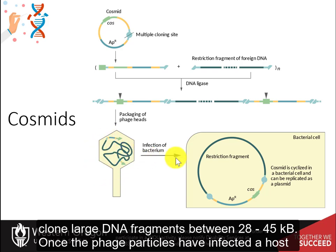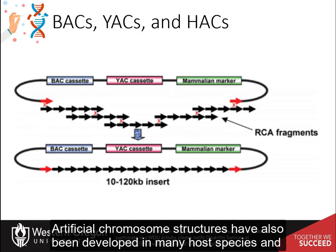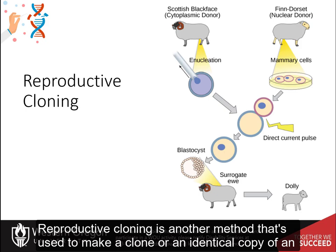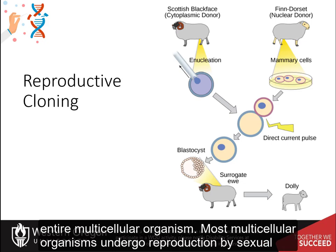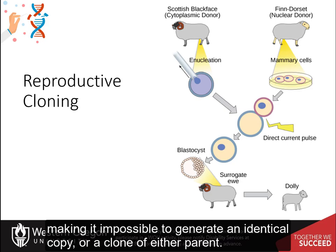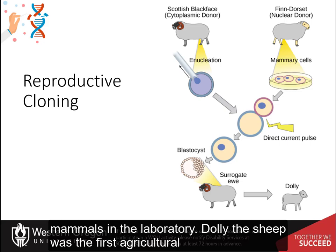Artificial chromosome structures have also been developed in many host species and can hold large DNA fragments up to 120 kb or more in some cases. Reproductive cloning is another method used to make a clone or an identical copy of an entire multicellular organism. Most multicellular organisms undergo reproduction by sexual means, which involves the contribution of DNA from two individual parents, making it impossible to generate an identical copy of either parent. However, recent advances in biotechnology have made it possible to reproductively clone mammals in the laboratory.